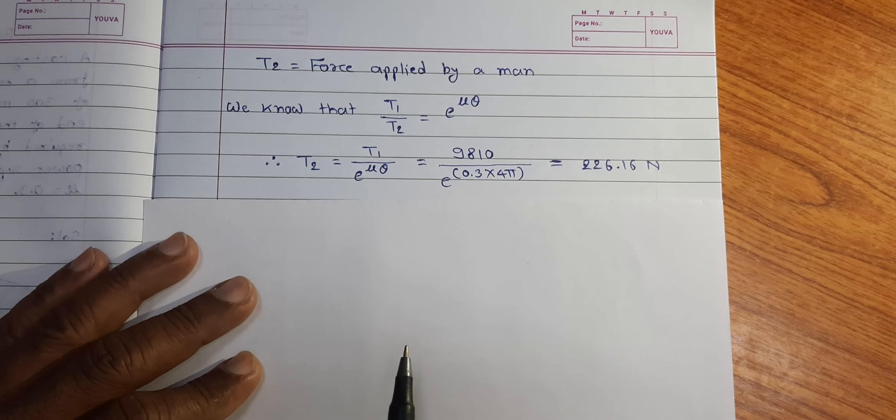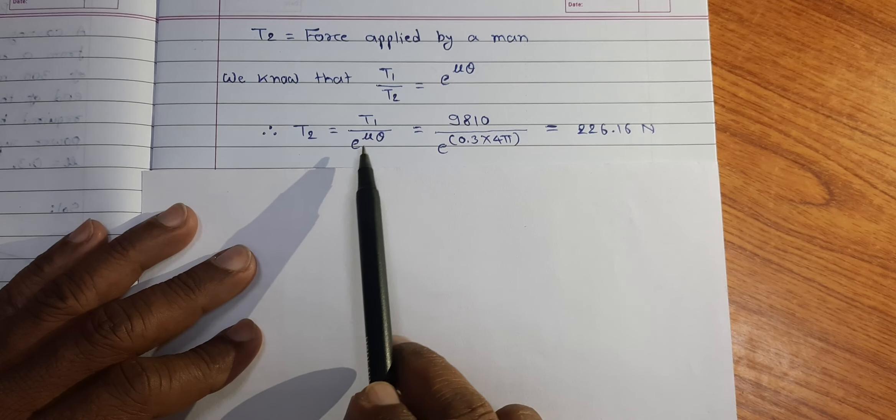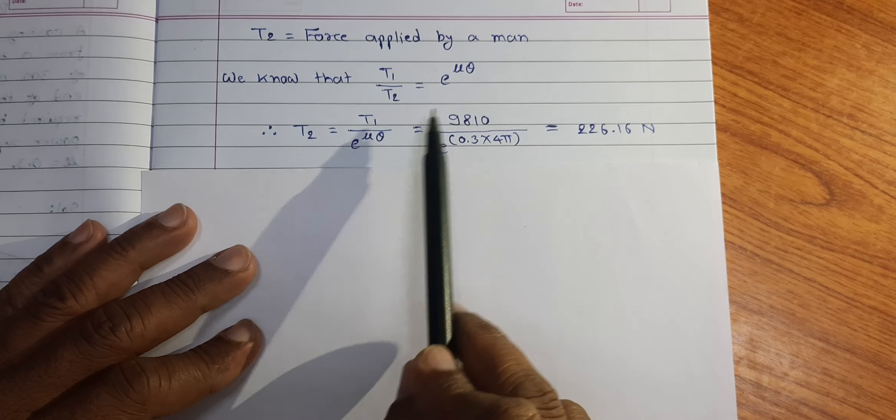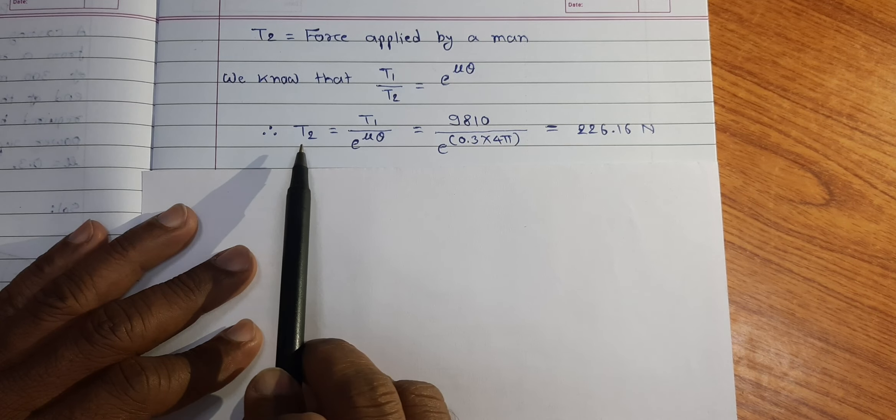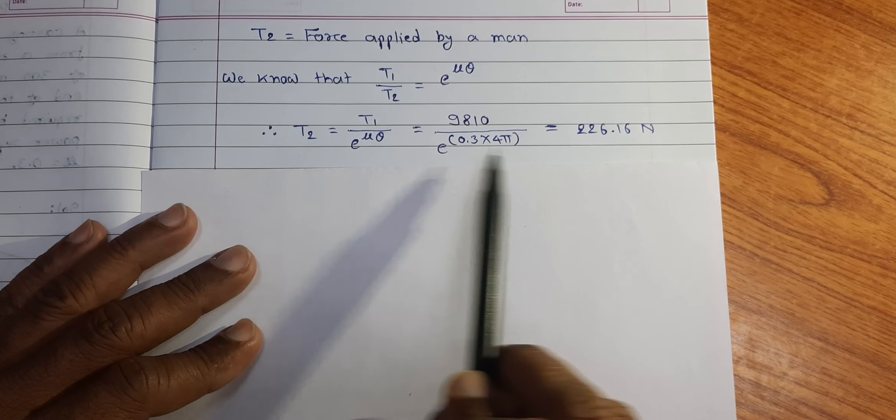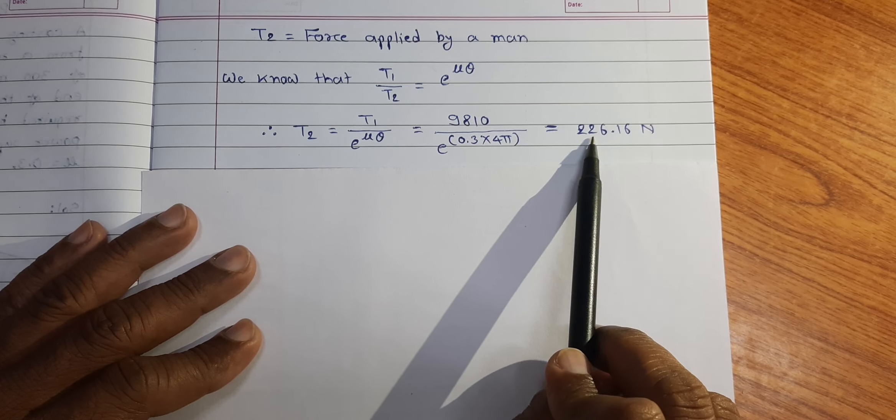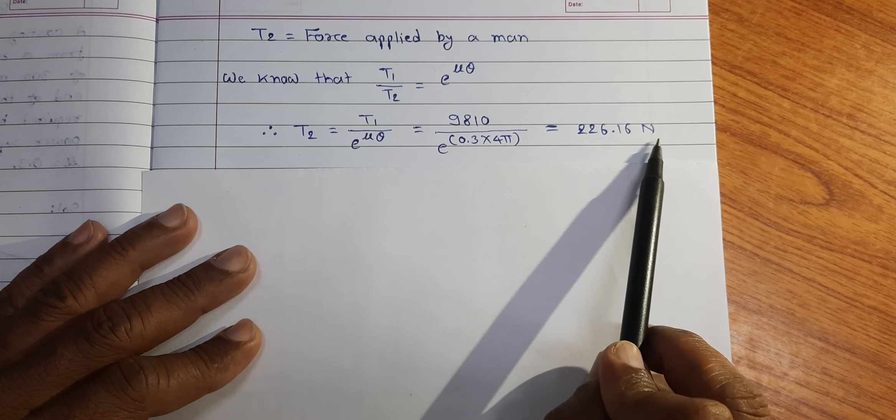Substituting these values of T1, mu and theta and on calculation we found slack side tension T2 is equal to 226.16 N.